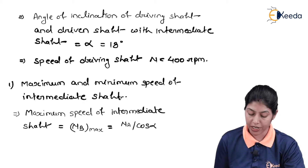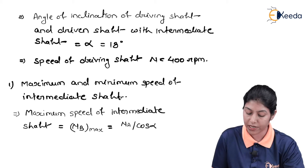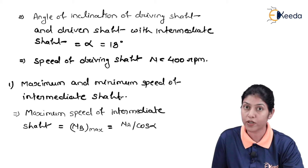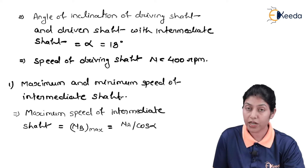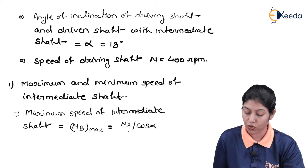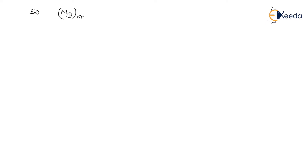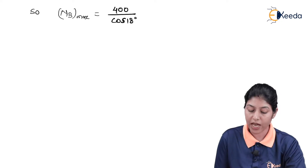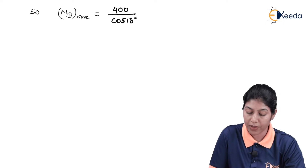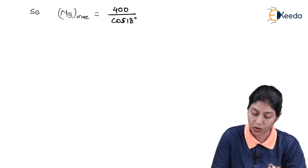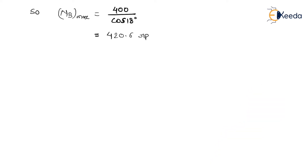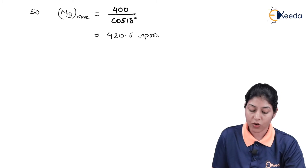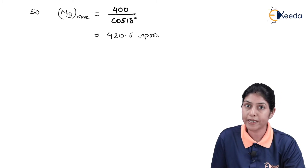The maximum speed of the intermediate shaft, NB max, is given by the formula NB max = NA / cos α. In terms of omega, we can write omega B max = omega A / cos α. With NA = 400 RPM and alpha = 18 degrees, the maximum speed of the intermediate shaft is 420.6 RPM.